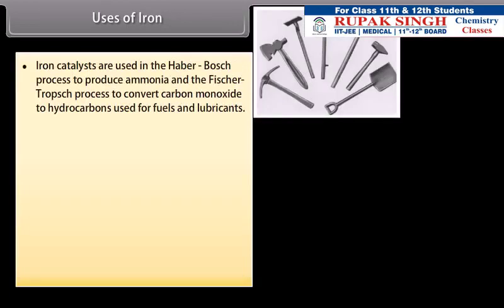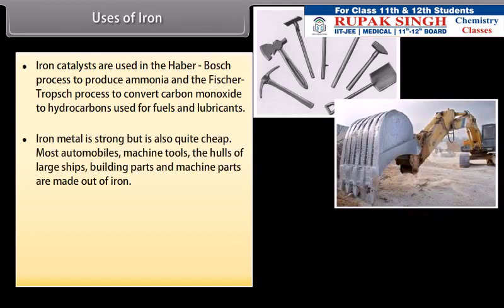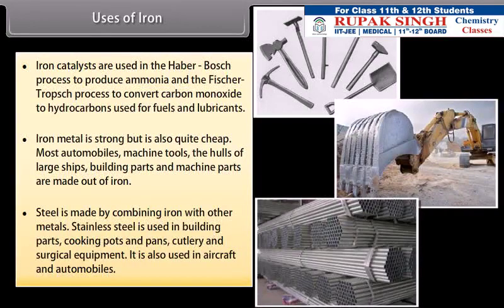Uses of iron. Iron catalysts are used in the Haber-Bosch process to produce ammonia and the Fischer-Tropsch process to convert carbon monoxide to hydrocarbons used for fuels and lubricants. Iron metal is strong but is also quite cheap. Most automobiles, machine tools, the hulls of large ships, building parts and machine parts are made out of iron. Steel is made by combining iron with other metals. Stainless steel is used in building parts, cooking pots and pans, cutlery and surgical equipment. It is also used in aircrafts and automobiles.